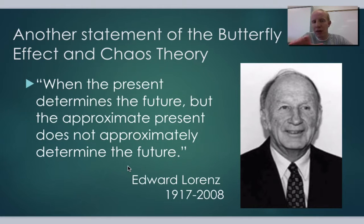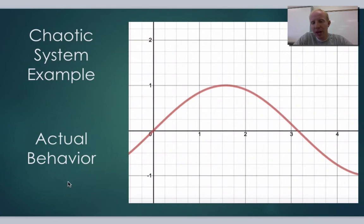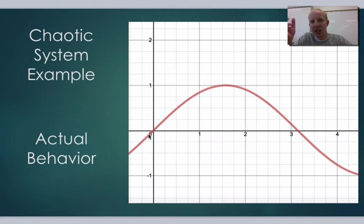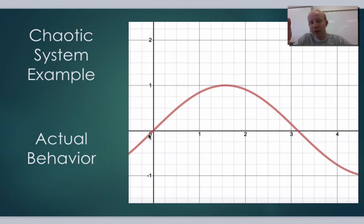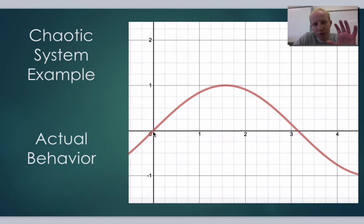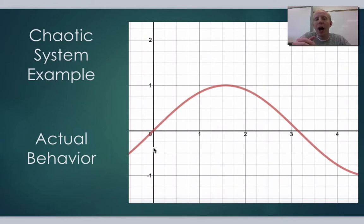Let me give you a graphical visualization of chaos theory. Let's say we have a chaotic system and this is its actual behavior — how the system is going to behave. This could be the motion of an object moving up and down, like a chaotic spring. Now let's say we're trying to model this behavior on the computer using a differential equation. How close we can get to the initial measurement — the exact position, velocity, and acceleration — determines how well we predict it in the future.